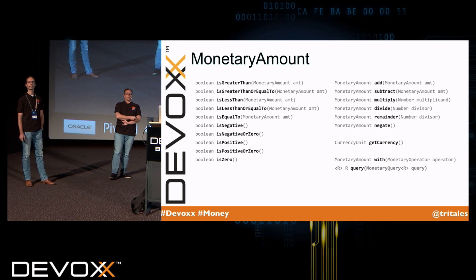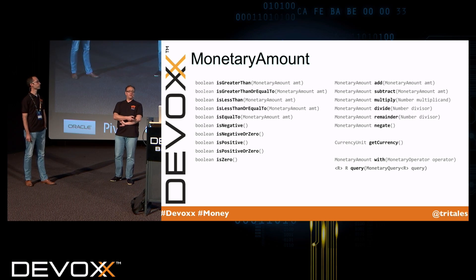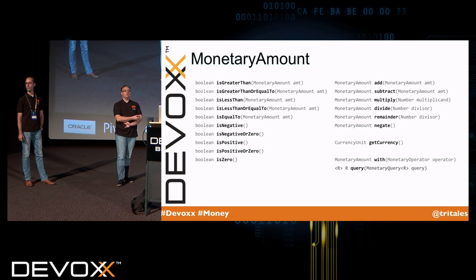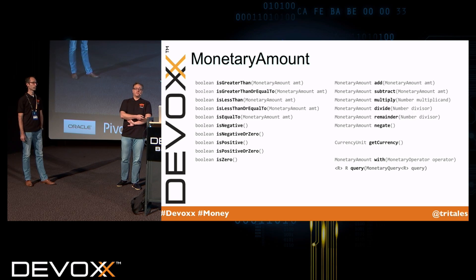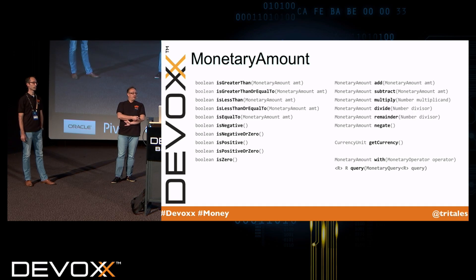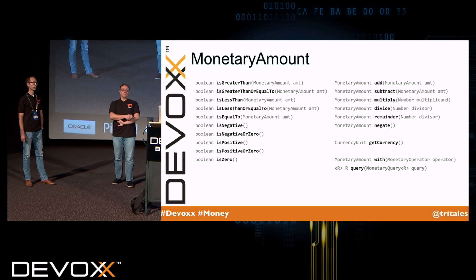Money also has to do with the amount, so there's a MonetaryAmount interface defined. Again, implementations are required to be thread-safe and immutable. There are lots of methods, but basically four categories: standard Boolean operators like isGreaterThan or isNegative; arithmetic methods like add or divide; a method to get the currency for this amount; and methods like with and query for dealing with predicates and higher-order functions.